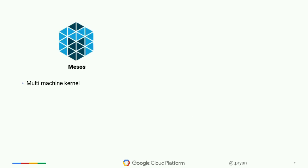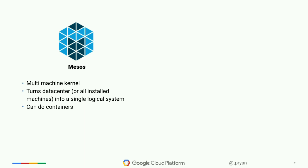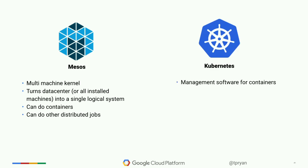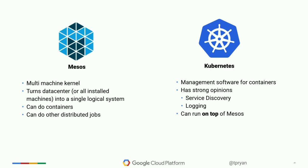The second comparison question I usually get is about Mesos. Mesos is a multi-machine kernel that turns a data center into a logical system. It can handle containers and does it well, but it can also do other distributed job-type things. Kubernetes, on the other hand, is specifically designed for container management — it has strong opinions on service discovery and logging. Kubernetes can actually run on top of Mesos. Some people have used Mesos to get auto-scaling Kubernetes clusters working, because Mesos can auto-scale the underlying hardware nodes.